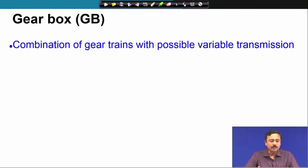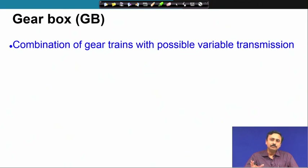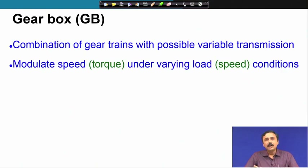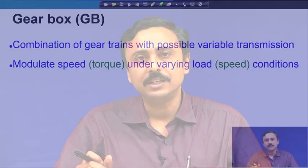A gear box is a combination of gear trains with possible variable transmission. When we require variable transmission ratios, we require a gear box with certain gradations of gearing ratios. These are used to modulate speed for varying load conditions, or to modulate torque under varying speed conditions.